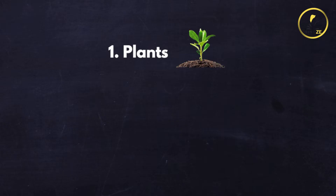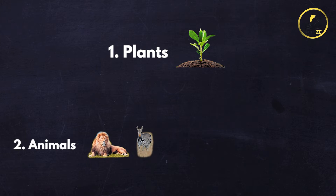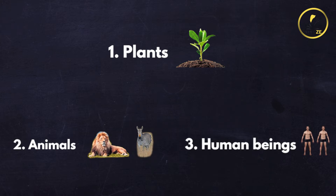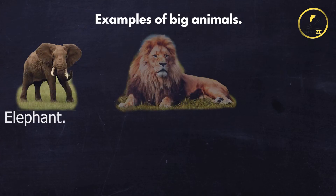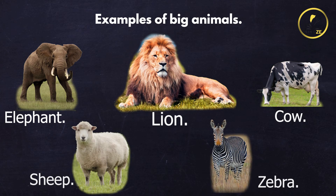we have animals; number three, we have human beings. In animals we have different animals — we have small animals and we have big animals. Big animals, for example, we have elephant, lion, zebra, cow,